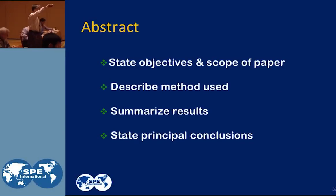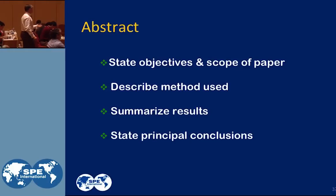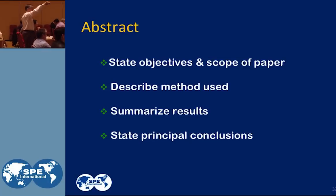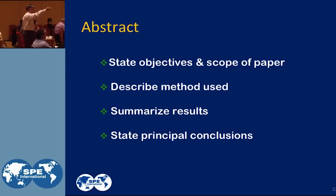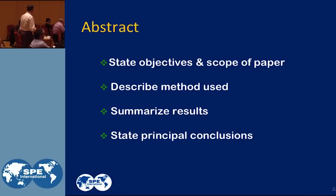Abstracts. State the objectives and the scope of the paper — why are you writing the paper? That's what should go in the abstract. Remember, 350 words. Describe your method used — if it's a laboratory or experimental type paper, describe what you did. Summarize the results, state the principal conclusions. And you do all of that in the abstract — 350 words.